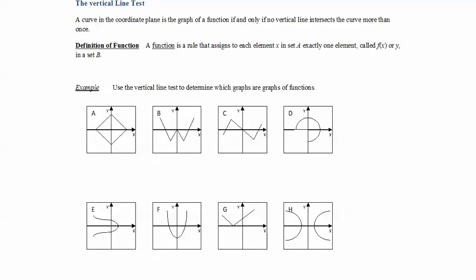In this video we'll review a definition of a function and then talk about the vertical line test that helps us determine if a curve is a function or not. A function is a rule that assigns each element x in a set A exactly one element, called f of x or y, in a set B. In other words, a curve is a function if for every x there is one and only one y.